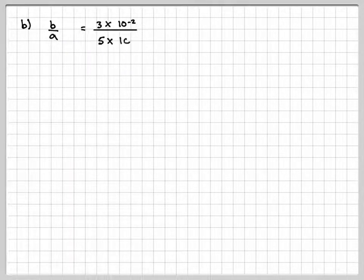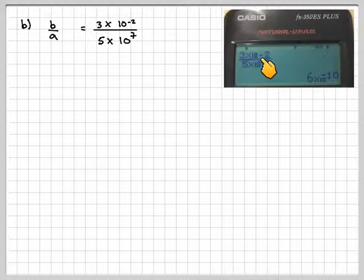Now B is B divided by A. So write down 3 times 10 to the minus 2 and 5 times 10 to the 5. Now, so you put that in on your calculator.